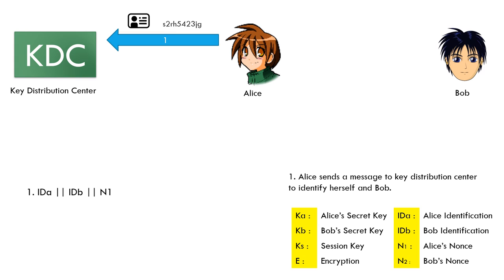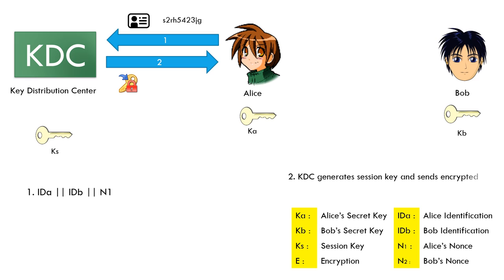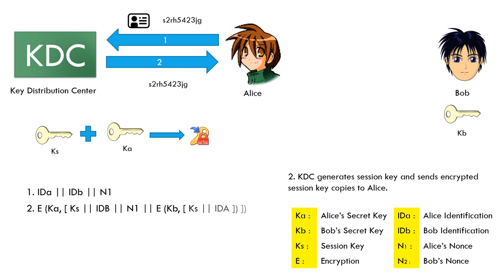At this moment, secret keys are shared between Alice and the Key Distribution Center, and Bob and the Key Distribution Center. Then, the Key Distribution Center generates a session key and sends two encrypted session key copies to Alice, alongside Alice's nonce to assure the message is replying to that particular message. One copy is encrypted using the secret key of Alice, while the other is encrypted using Bob's secret key.